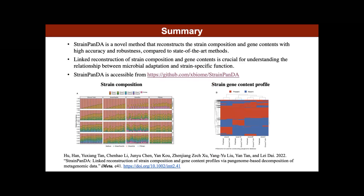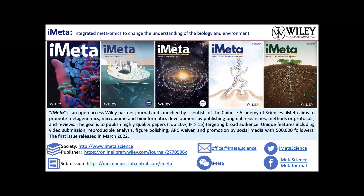In summary: first, StringPanda is a novel method that reconstructs the string composition and gene contents with high accuracy and robustness, compared to state-of-the-art methods. Second, linked reconstruction of string composition and gene contents is crucial for understanding the relationship between microbial adaptation and string-specific function. Finally, StringPanda can be accessed from GitHub — you are welcome to use the tool and provide valuable feedback. Thank you all for listening.